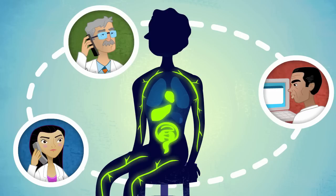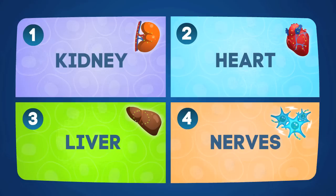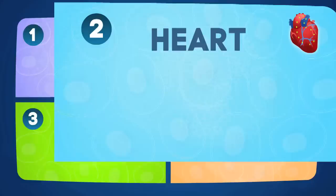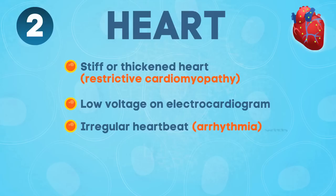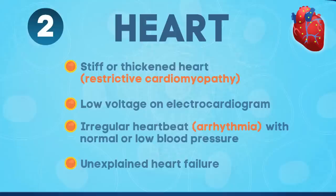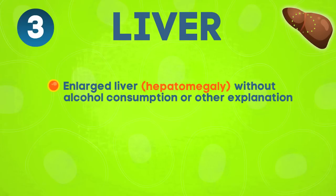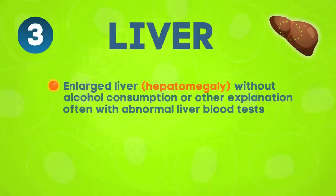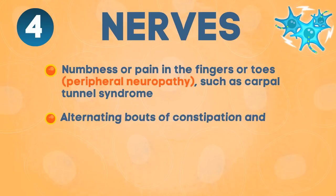As part of the differential diagnosis, the four most common clinical settings in which amyloidosis should be considered are: 1. Loss of massive amounts of protein in the urine 2. Stiff or thickened heart, low voltage on electrocardiogram, irregular heartbeat with normal or low blood pressure, or unexplained heart failure 3. Enlarged liver without alcohol consumption or other explanation, often with abnormal liver blood tests 4. Numbness or pain in the fingers or toes, such as carpal tunnel syndrome, or alternating bouts of constipation and diarrhea, while also feeling lightheaded when standing up.